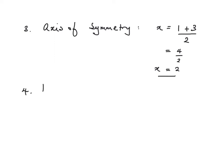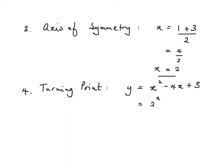Next we work out the turning point. The function is y equals x squared minus 4x plus 3. We substitute x equals 2: 2 squared minus 4 times 2 plus 3 equals 4 minus 8 plus 3, which is minus 1. So the turning point is at (2, −1).